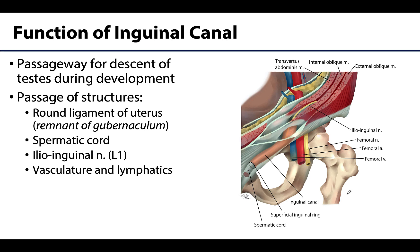So what is the function of having a passageway in a relatively superficial region of the inferior abdominal wall? There are two major functions. First, it serves as a passageway playing a role in the descent of the testes from the abdominal region to the scrotum during development. Additionally, it is a pathway for many structures in the adult, including the round ligament of the uterus, which is a remnant of the gubernaculum, or the spermatic cord. The ilioinguinal nerve, a branch of the lumbar plexus, will also traverse the inguinal canal, as well as other smaller vascular and lymphatic structures.